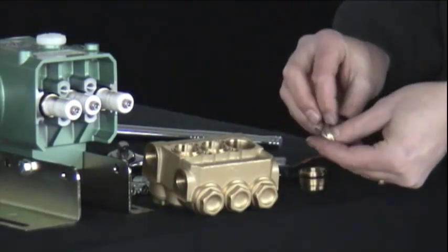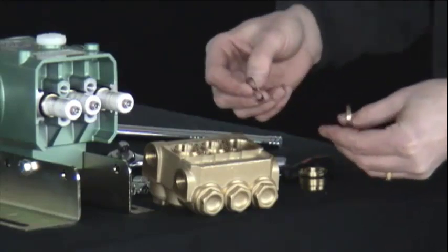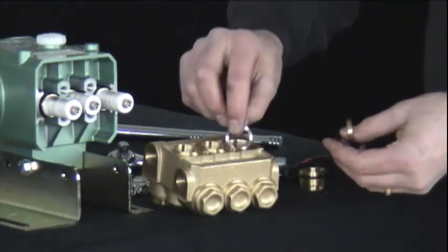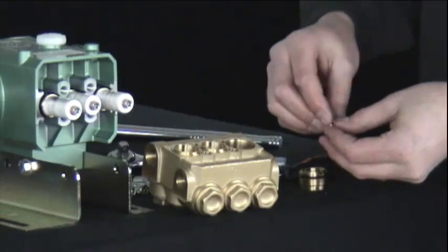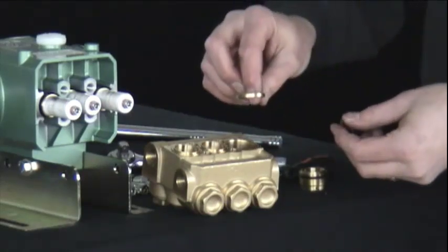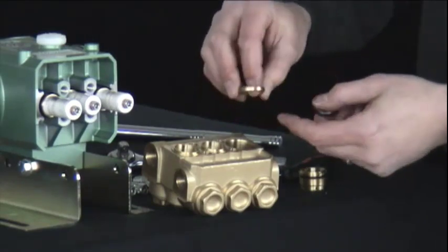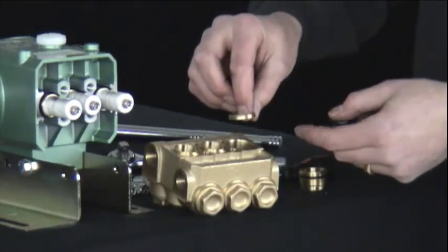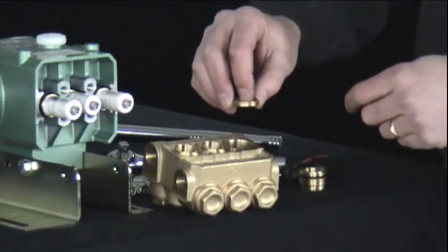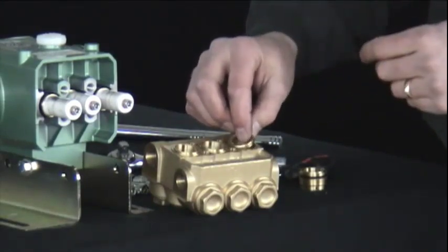Next, we'll take the stainless steel wave washer, place it first into the seal chamber, followed by the brass support ring. The flat edge will go down against the stainless steel wave washer with the raised portion of this brass support ring facing up towards you.